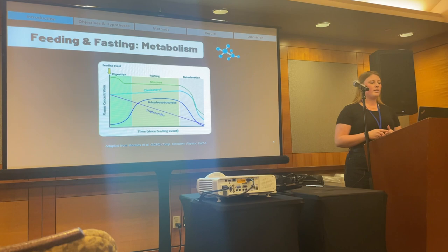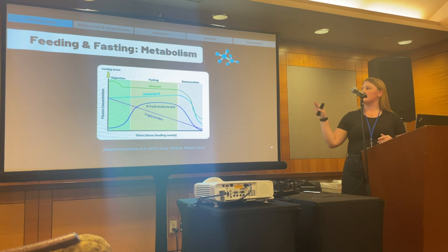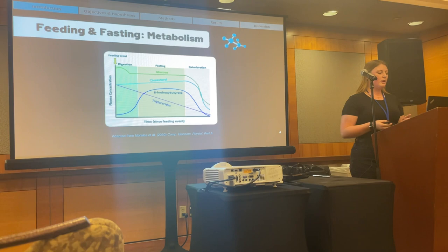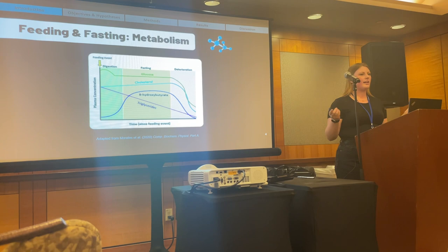These metabolites are measurable in the blood plasma of animals, and these trends can be seen to change over time. Each metabolite displays a distinct pattern as time passes from the last feeding event. These trends have been really well established in animals in captivity undergoing food restriction in laboratory-like settings, so we have an idea of what they should look like as time passes from that last feeding event.